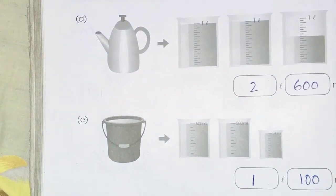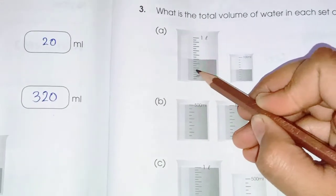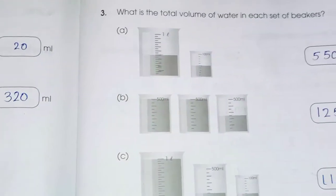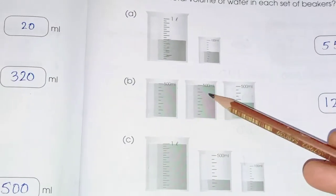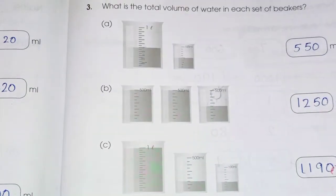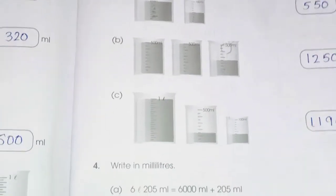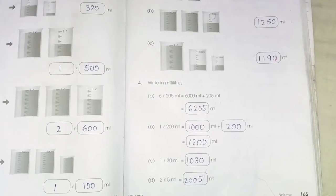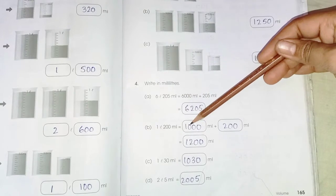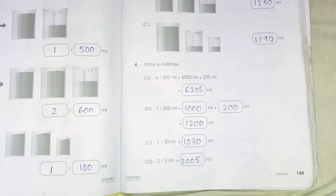We have one liter 500 milliliters, 2 liters 600 milliliters. Five hundred plus five hundred equals one liter, so that gives 1 liter 100 milliliters. Counting one through five and again one through five gives 500 and 550 milliliters. Five hundred plus five hundred is 1000, then adding more gives 1250, which is 1 liter 190 milliliters. Adding the numbers: 6000 plus 250 milliliters equals 6250 milliliters. One liter is 1000, plus 200 is 1200. One liter 30 means 1030. Two liter 5 means 2005.